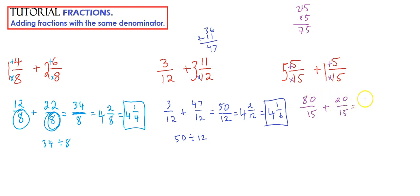20 plus 80, so that equals 100. We're talking in fifteenths, so the denominator stays as fifteenths. And we just have to figure out now how many times 15 will go into 100, and that is 6. So 15 times 6, what is that? So that's 30.